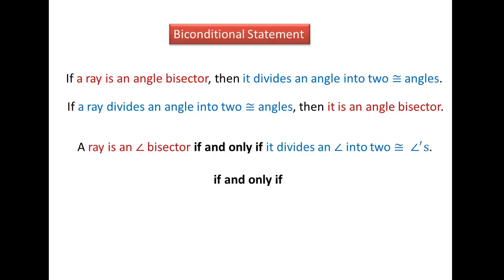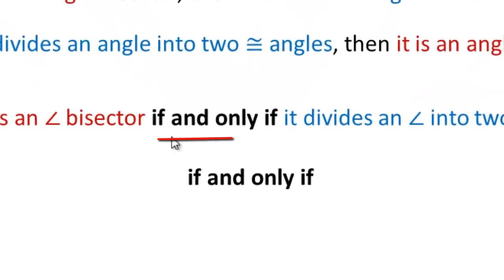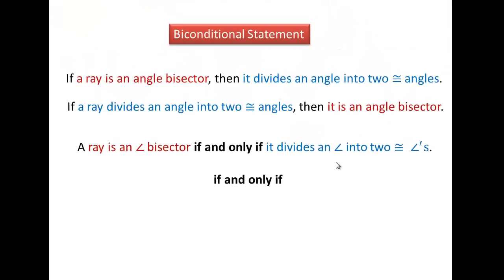So, a biconditional statement that we would write, where we would combine these two statements here, would read: a ray is an angle bisector if and only if it divides an angle into two congruent angles. So I've taken the hypothesis and the conclusion and I've combined them. But take note that I do not have an if in the beginning, I do not have a then here. Instead, I have the words if and only if. And the thing about a biconditional statement, it is always considered a reversible statement.